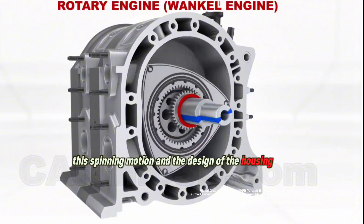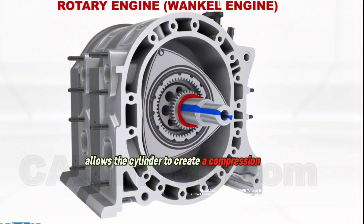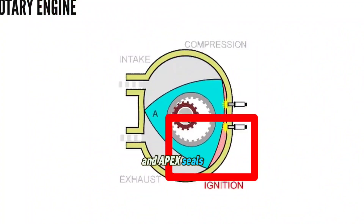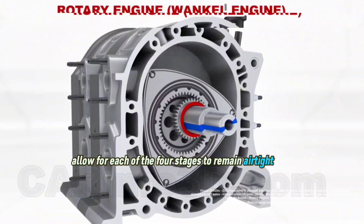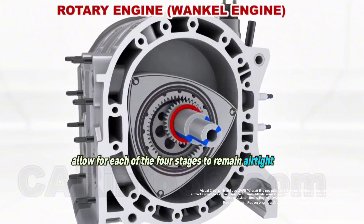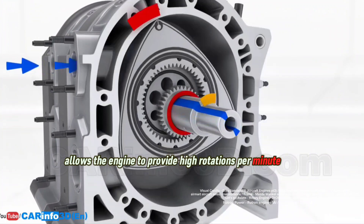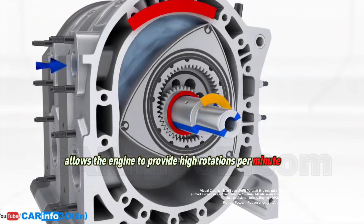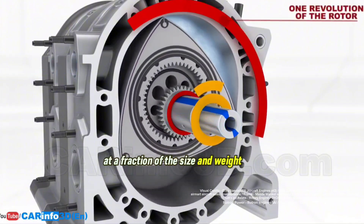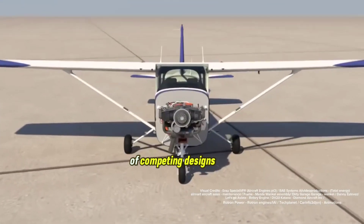This spinning motion and the design of the housing allows the cylinder to create compression, and apex seals allow each of the four stages to remain airtight. This design allows the engine to provide high rotations per minute and deliver more power at a fraction of the size and weight of competing designs.